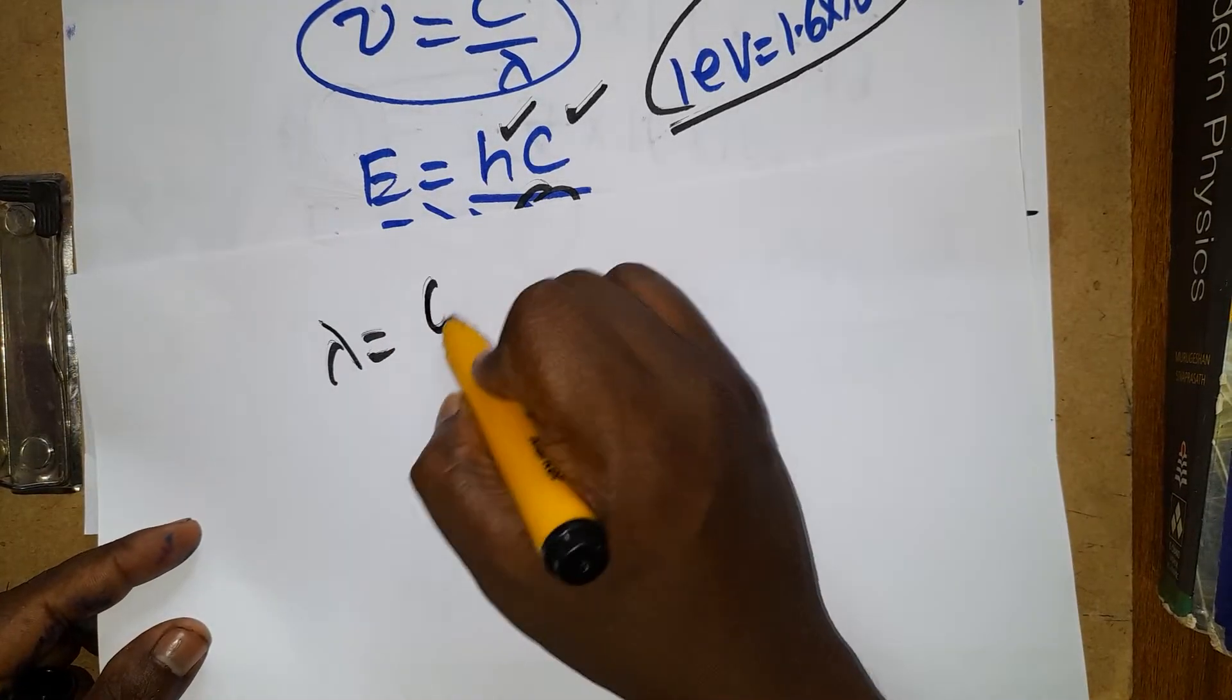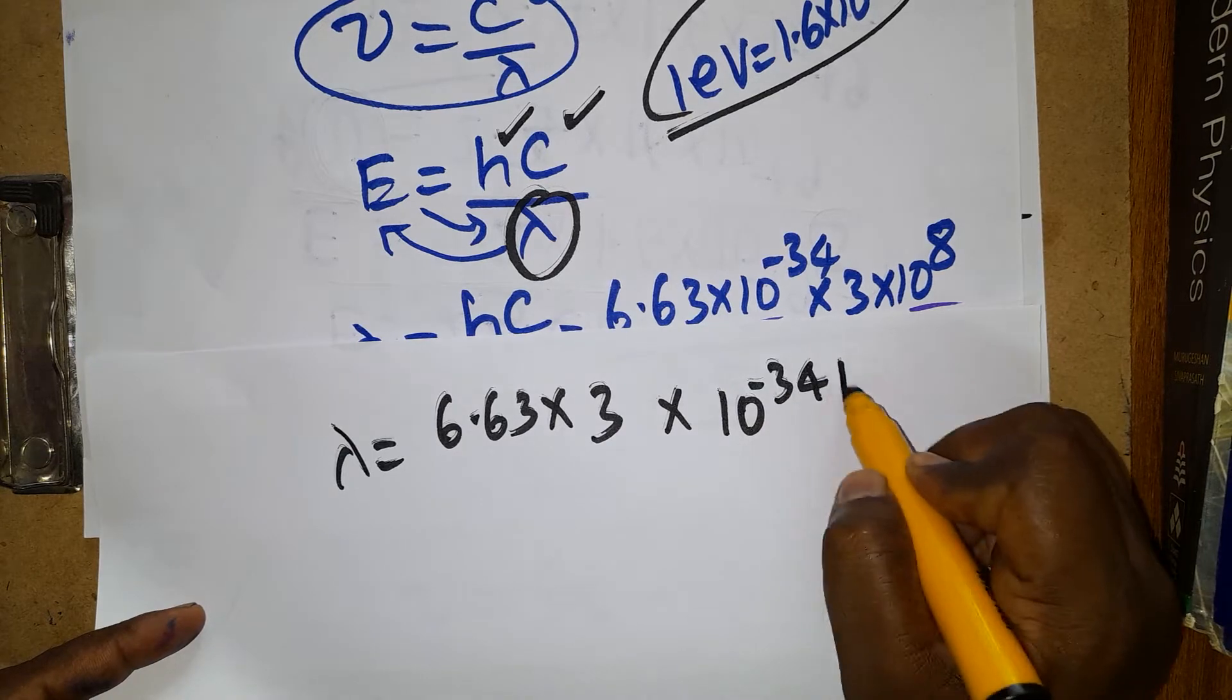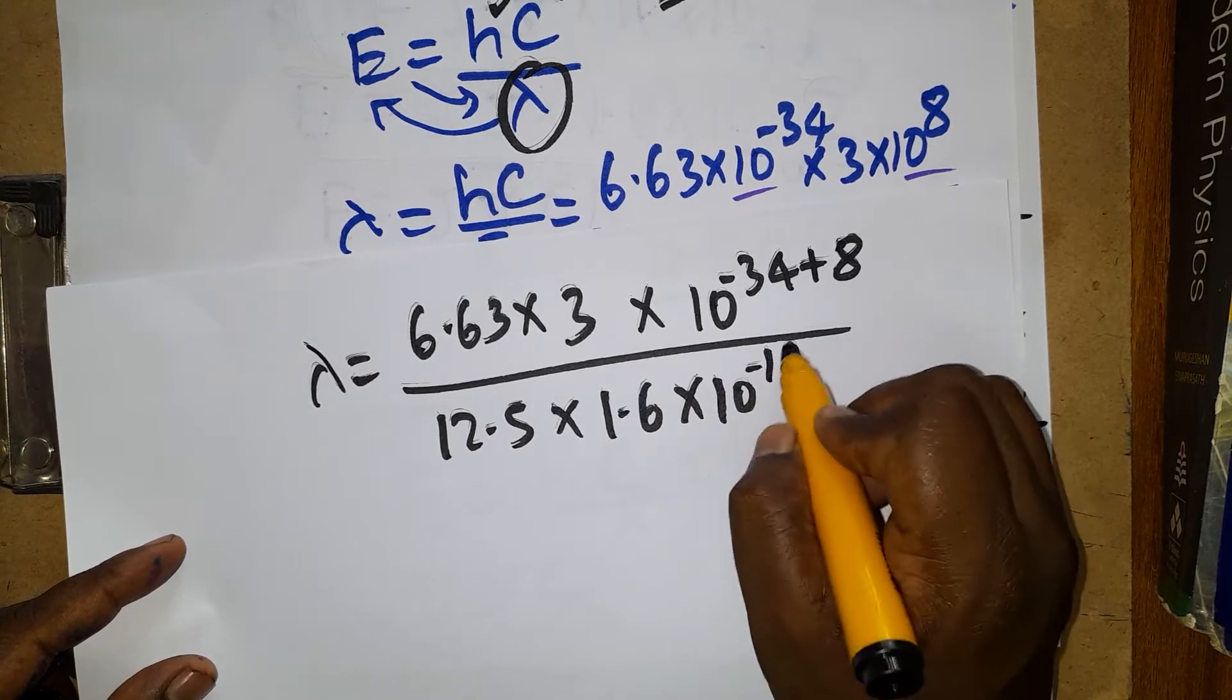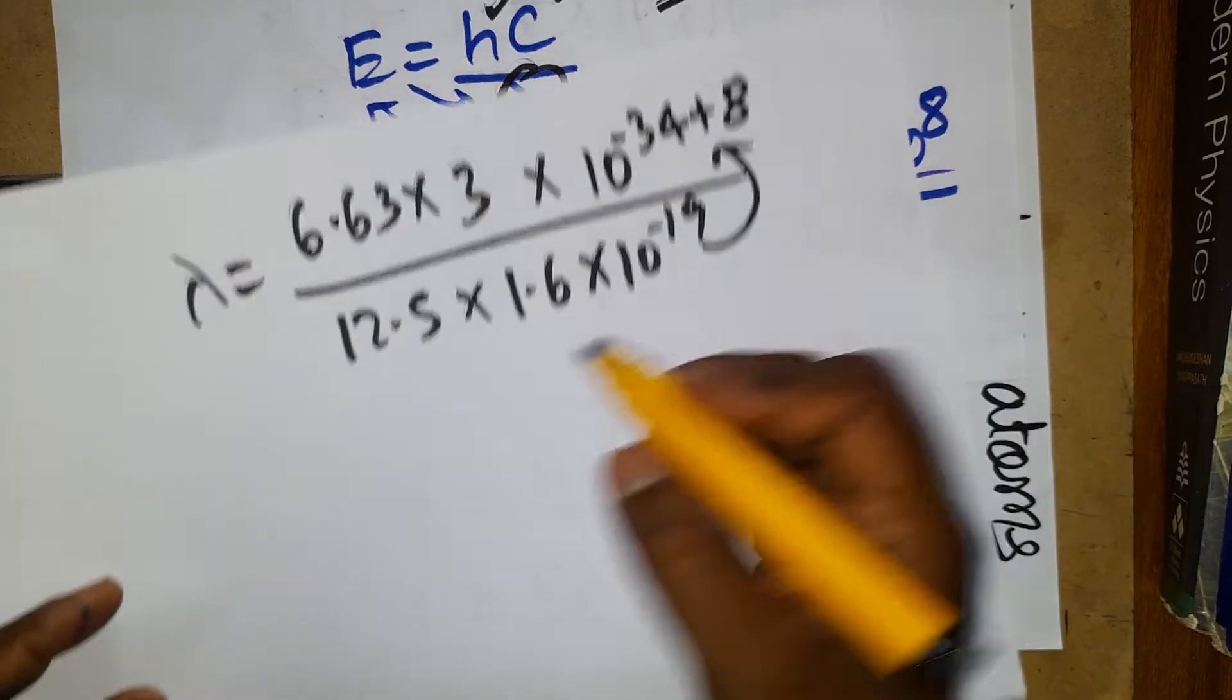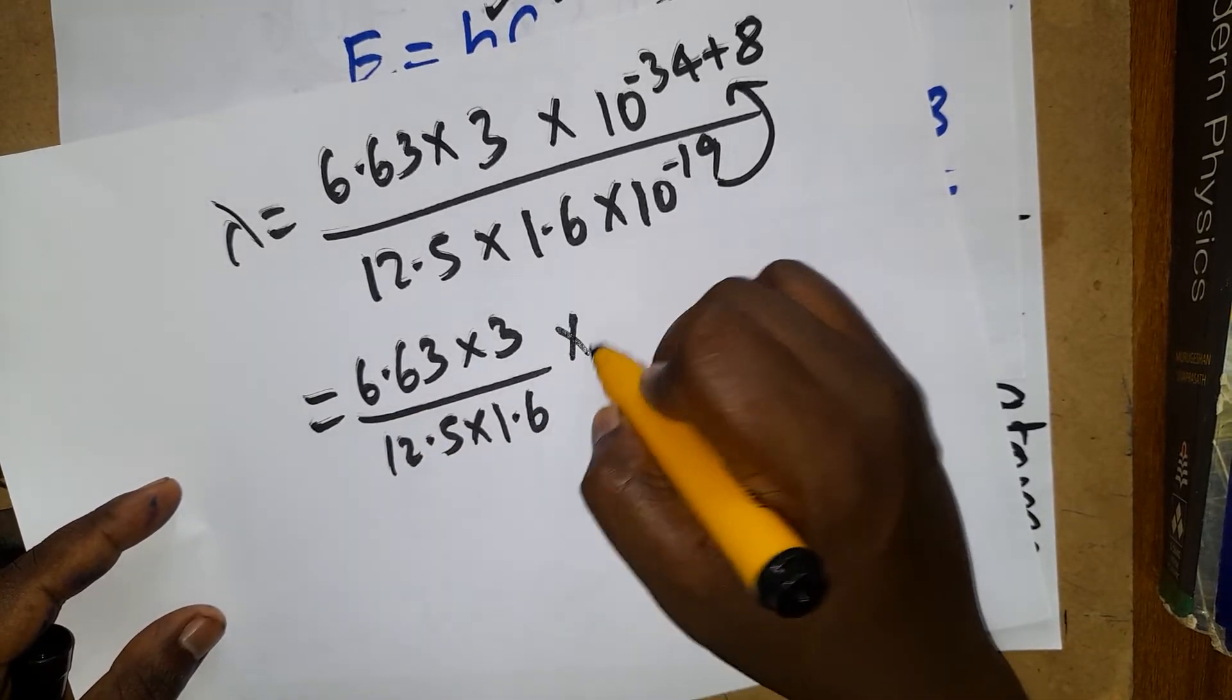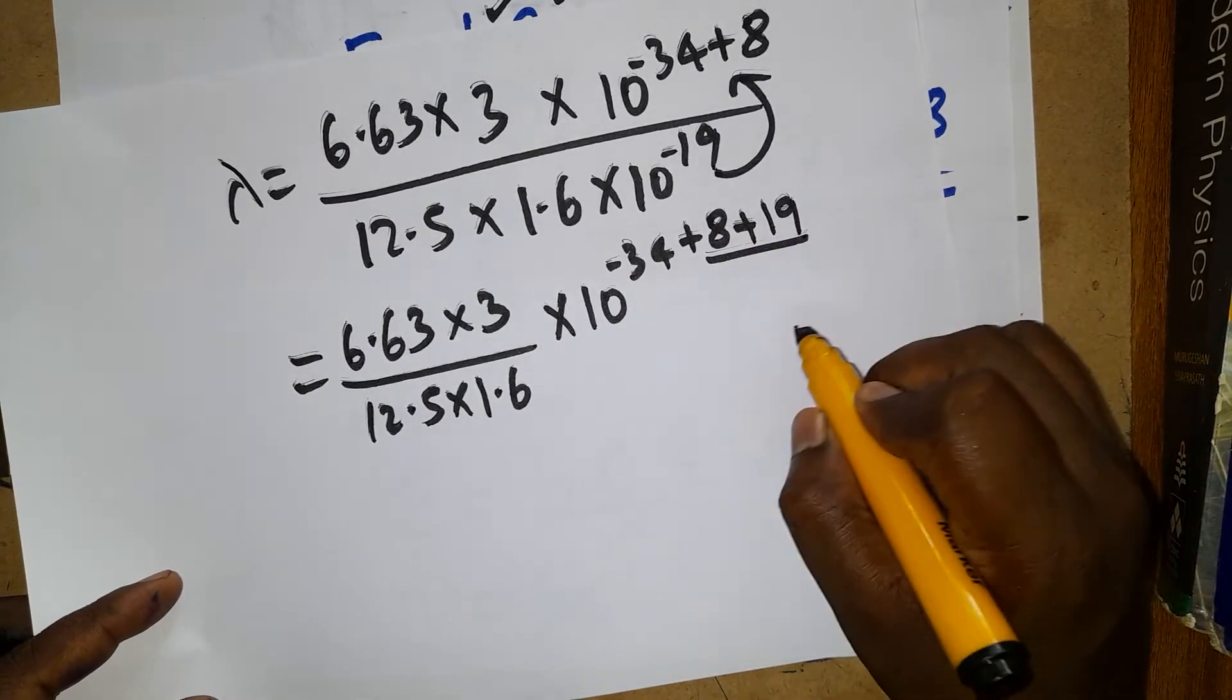Now I am going to calculate the wavelength. Wavelength equals 6.63 into 3 into 10 power minus 34 plus 8. The denominator is 12.5 into 1.6 into 10 power minus 19. From minus 19 in the denominator to numerator, it becomes plus 19.